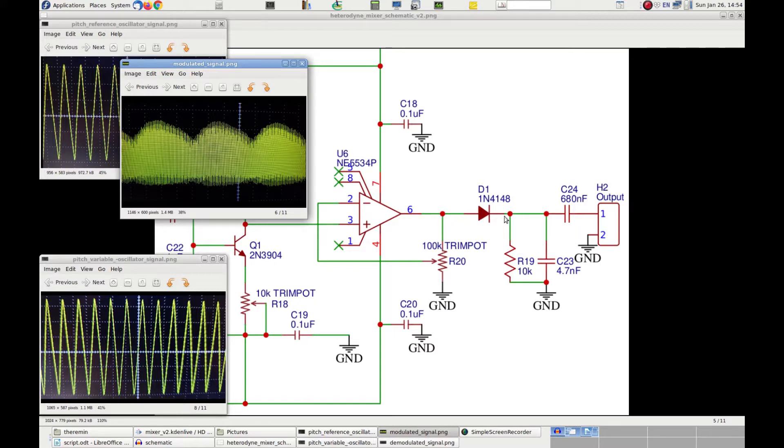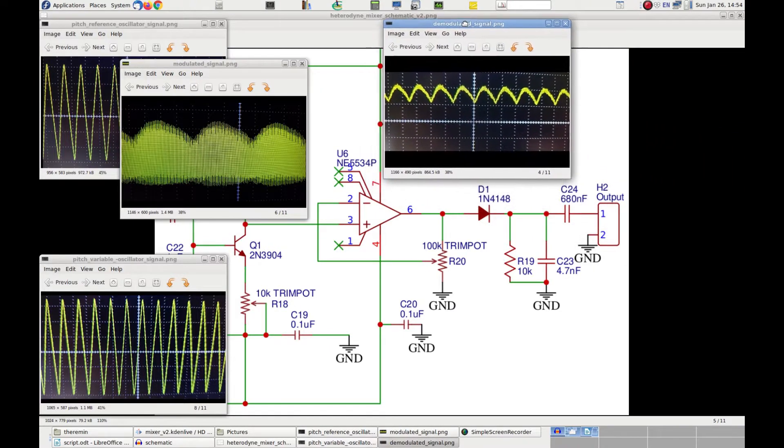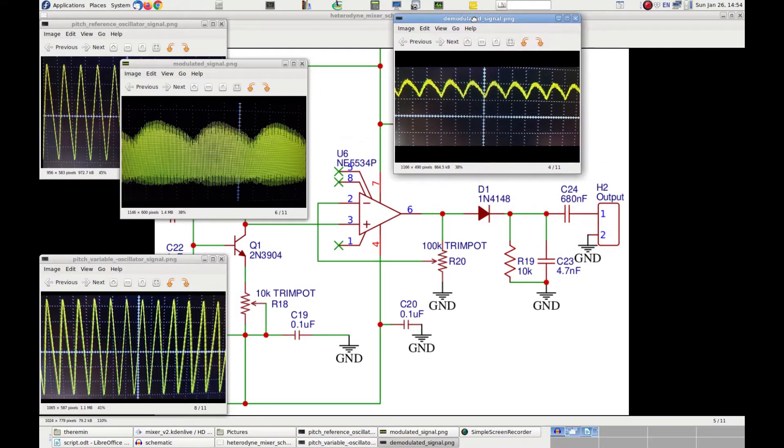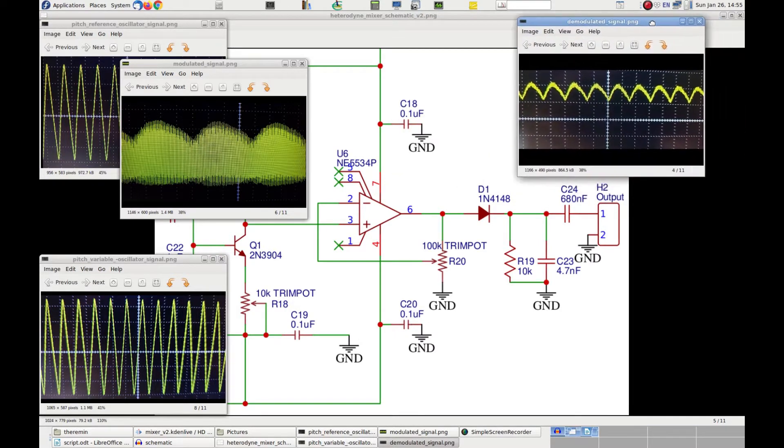This signal is therefore capable of traversing the diode on the positive part of the whole wave, and there is a low-pass filter, made of R19 and C23, that takes care of shunting the high frequency of the carrier toward ground, leaving only the modulation signal that now goes to the capacitor C24, which removes the DC component. And so, finally, at the end of this stage, we have a relatively clean audio signal, which can produce the sound of the theremin.